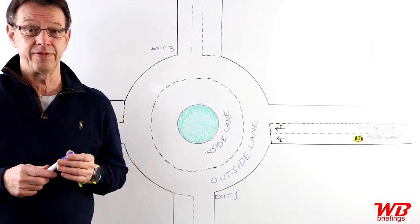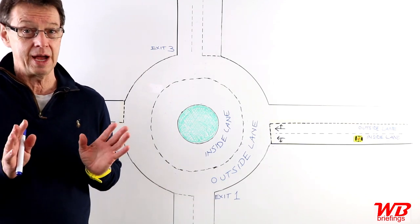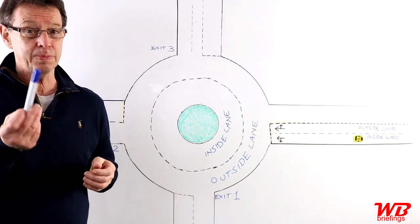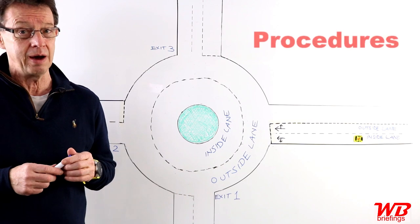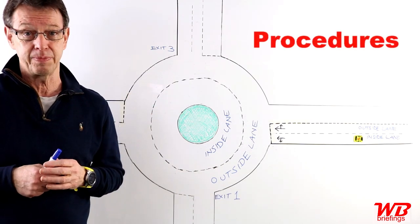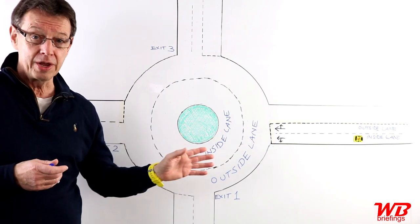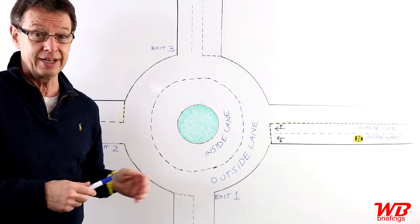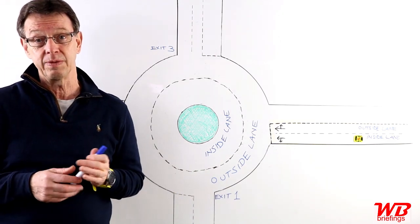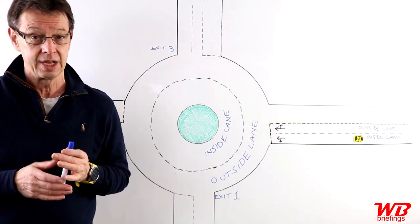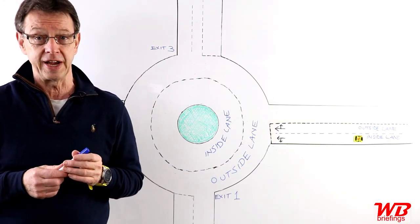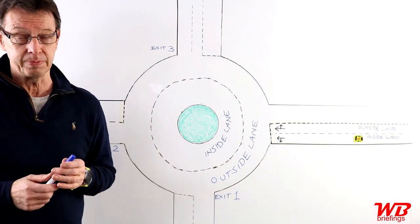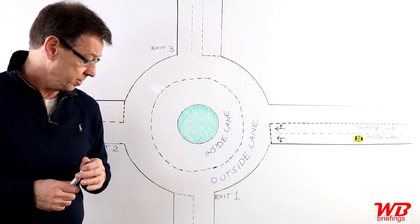Hi and welcome to this briefing on roundabouts. The briefings on roundabouts are a little bit complex and involved, so I've decided to split them into two parts. The first part covers procedures — which lane to be in on the approach, when to signal, when not to signal, which lane to be on the roundabout, and leaving. The other part, another presentation, is more on forward observation: looking at when to go, when not to go, and getting round the roundabout. So we'll start with procedures first.